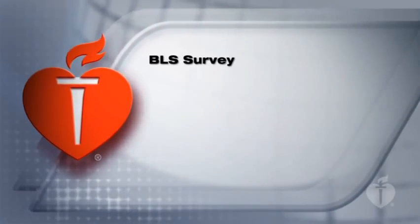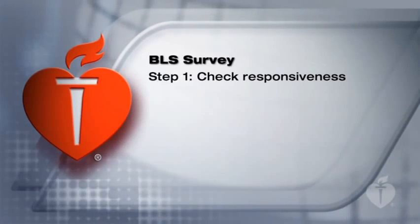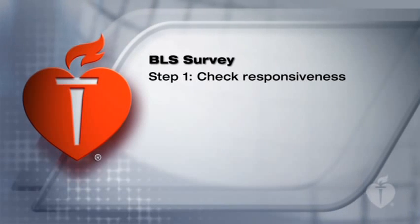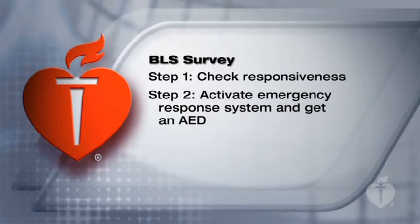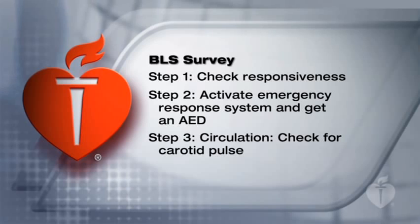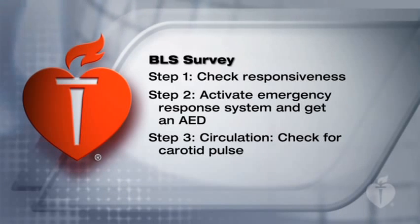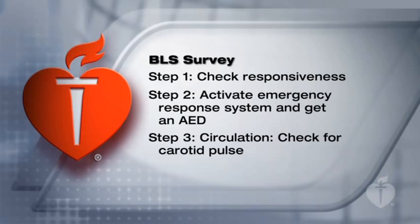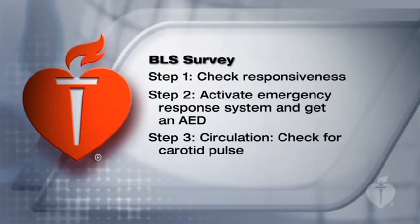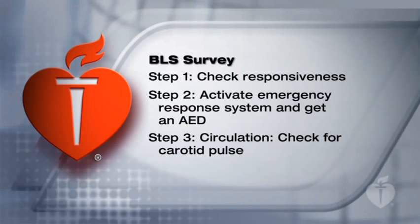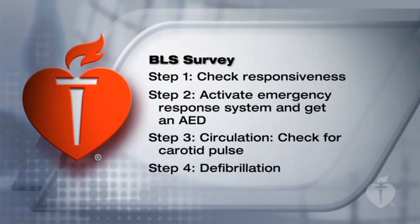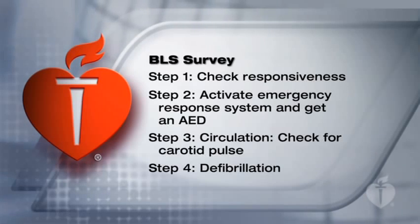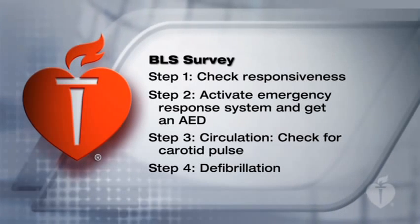Let's review the four steps of the BLS survey. Step 1: check responsiveness — tap and shout, and scan the chest for movement. Step 2: activate the emergency response system and get an AED. Step 3: circulation — check for a carotid pulse; if you cannot feel a pulse within 10 seconds, support circulation by giving cycles of 30 chest compressions followed by two ventilations. Step 4: defibrillation — as soon as possible, connect an AED or defibrillator and, as indicated, deliver a shock.